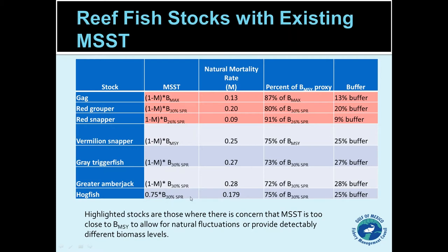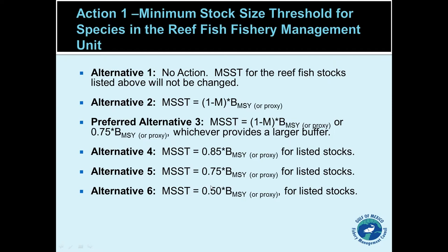Hogfish is currently not using the one-minus-M formula. This was just approved a few weeks ago and hogfish is scheduled to have its minimum stock size threshold set at 75% of its BMSY level, using 30% SPR as a proxy for MSY. If we did use the one-minus-M formula instead — since hogfish has a natural mortality rate of about 0.179, roughly 0.18 — it would be at 82% of the BMSY level, giving it a much narrower buffer.